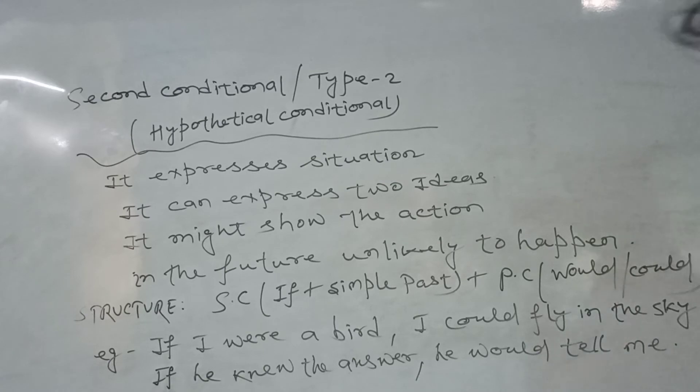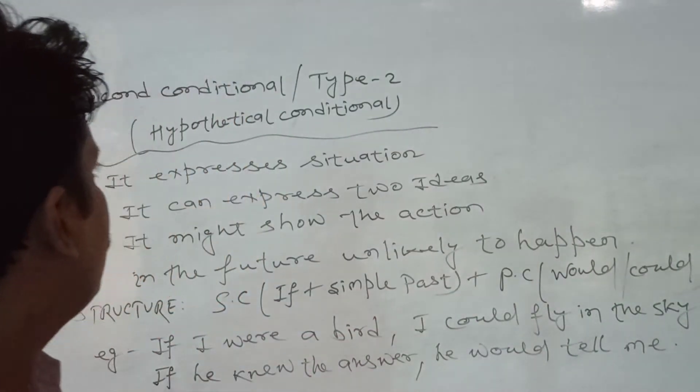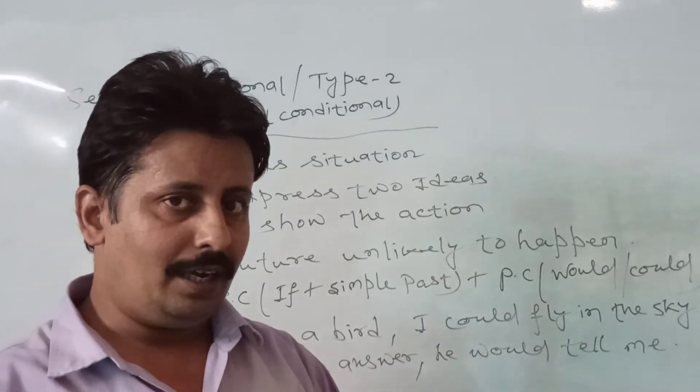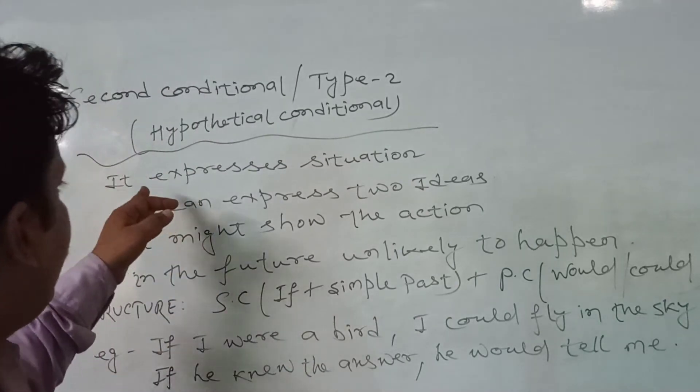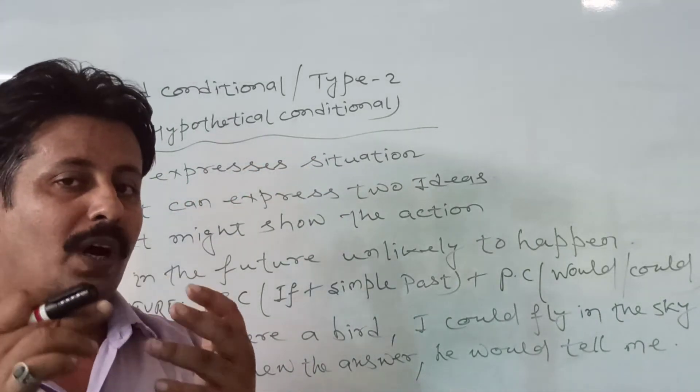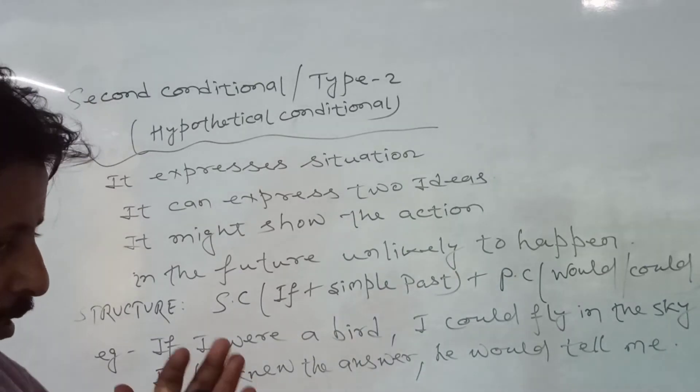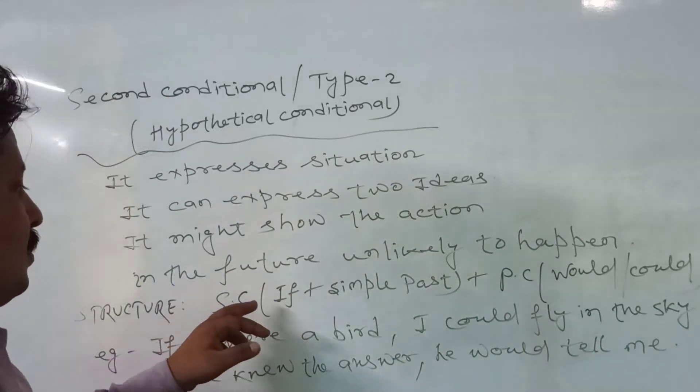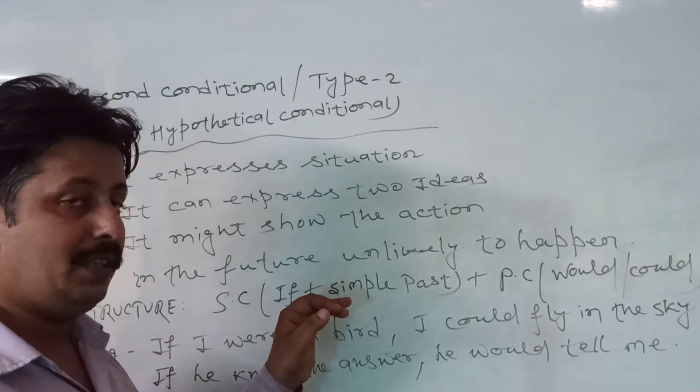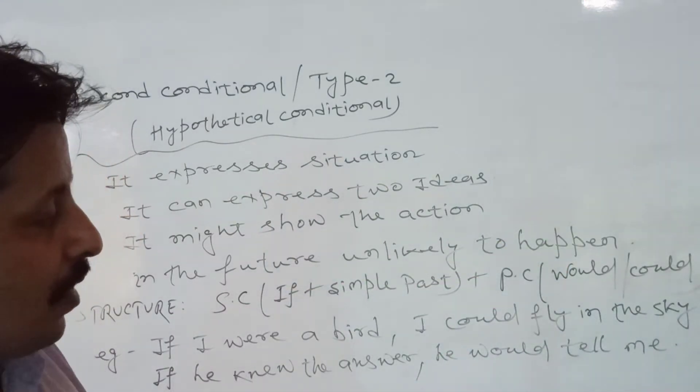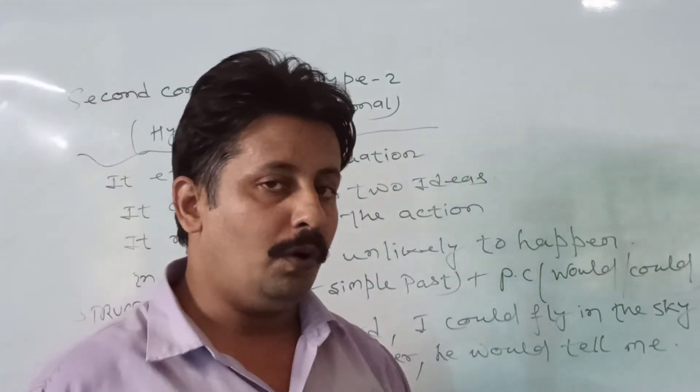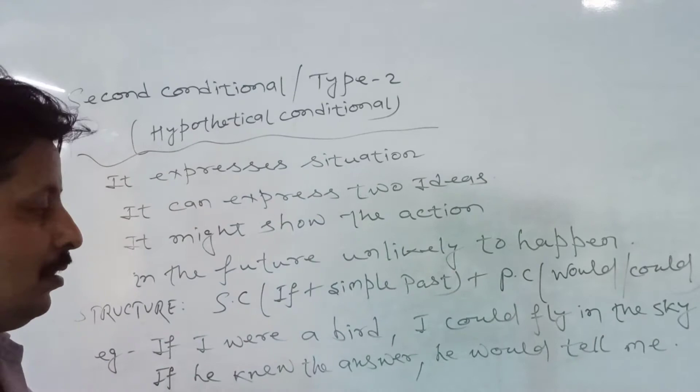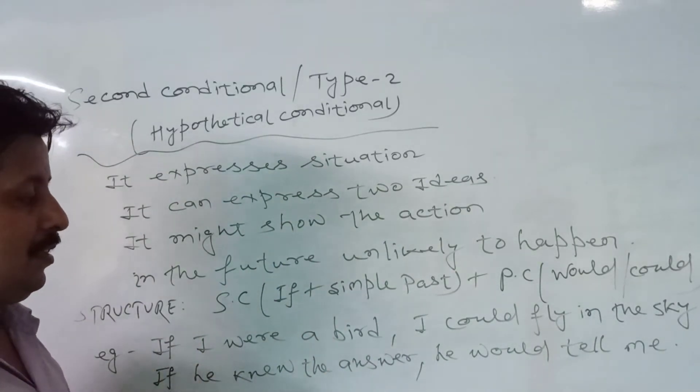See here second conditional, that is type two, or hypothetical condition - that is unlikely to happen. It expresses situation. It can express two types: one is it represents the things in future unlikely to happen. The subordinate clause will be with if plus past tense, and main clause will be with would or would plus base verb. For example: If I were a bird, I could fly in the sky. If he knew the answer, he would tell me. These like sentences you can use in hypothetical.